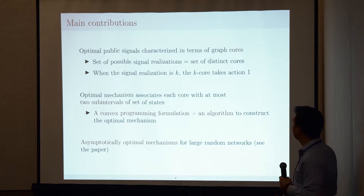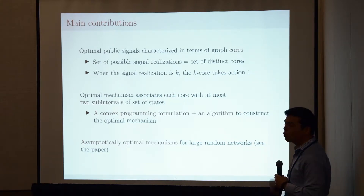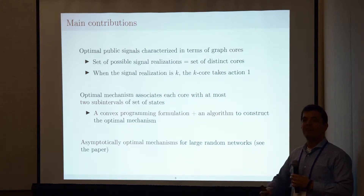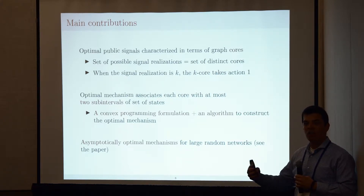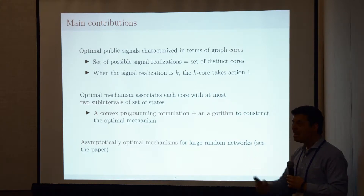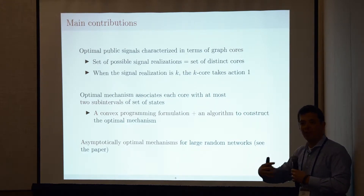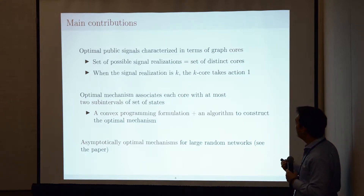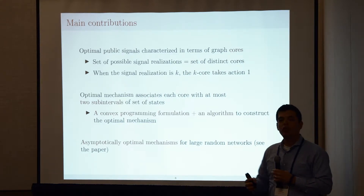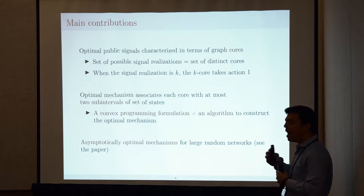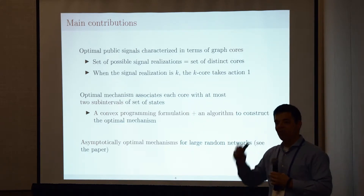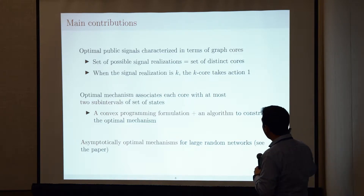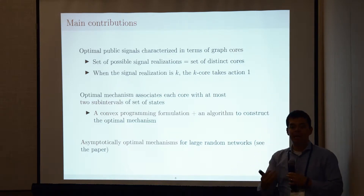Here are the contributions of the paper. First, I show that for any given network it is possible to characterize the optimal mechanism in terms of the k-cores of the underlying network. The k-core of a graph is the maximal induced subgraph where each node has degree at least k — think of groups of tightly connected agents. Under the optimal mechanism, the set of possible signal realizations correspond to the cores of the underlying graph, and the mechanism is incentive compatible: when the signal realization is k, the agents in the k-core find it optimal to take action one.